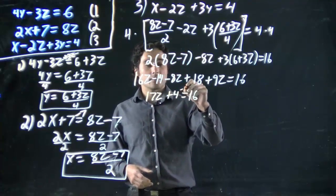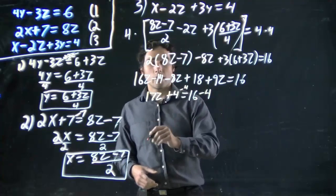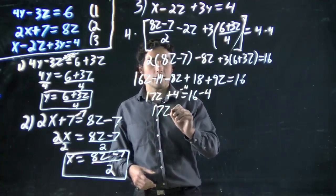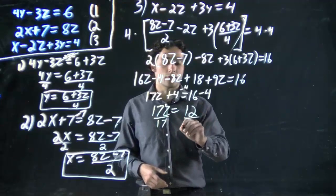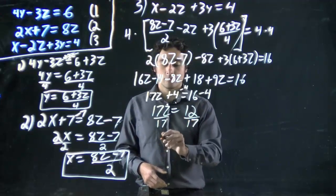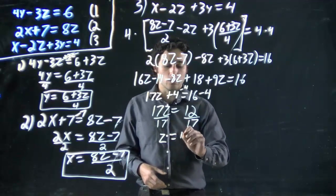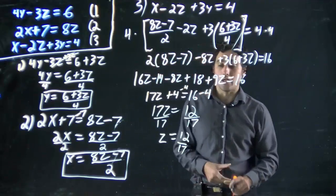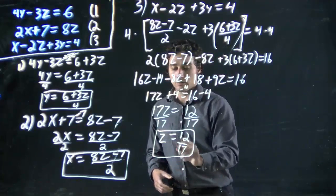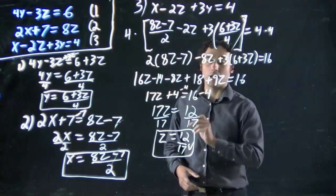We want to subtract 4 from both sides. We get 17z equals 12. Divide both sides by 17 to solve for z. We get z equals 12 over 17. Well, that is one of the answers I knew. That is something I needed. We got z! Now we also need x and y.